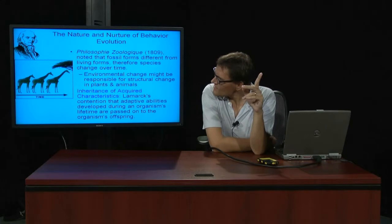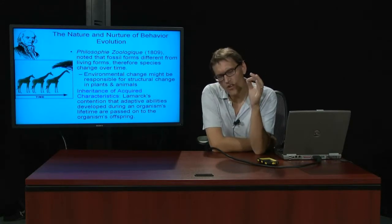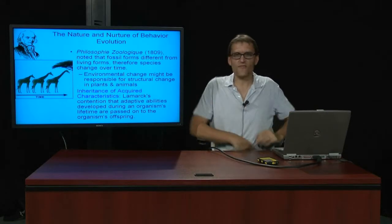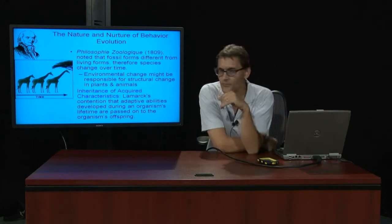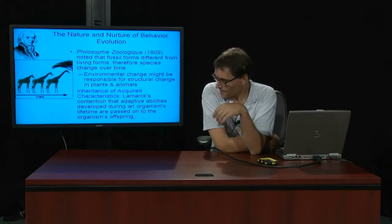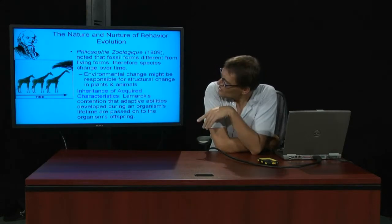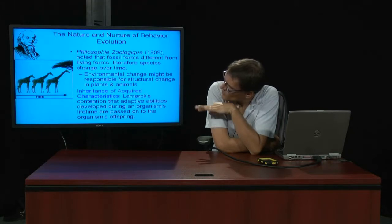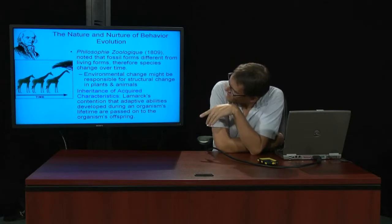The second problem is, how does it happen? And in that sense, evolution is, in fact, a theory because lots of people are questioning. The most famous explanation for how evolution occurs is called natural selection, which is Darwin's answer to that question. But before Darwin, there was Jean Lamarck.